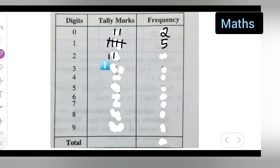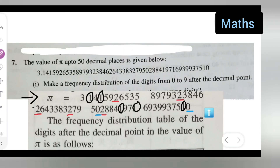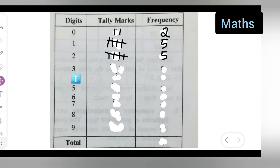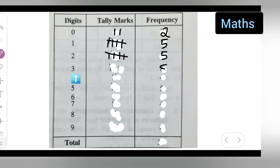Next, let's see how many times 3 is occurring. Let me circle them. The digit 3 occurs eight times: one, two, three, four, five, six, seven, eight — including two threes in one spot. So write down eight.